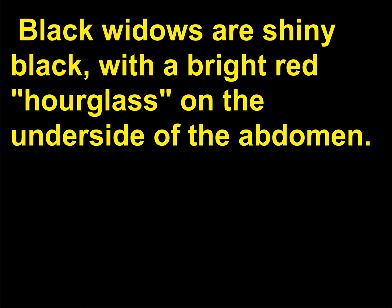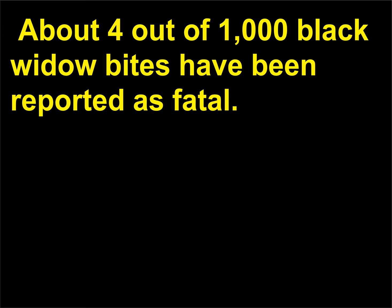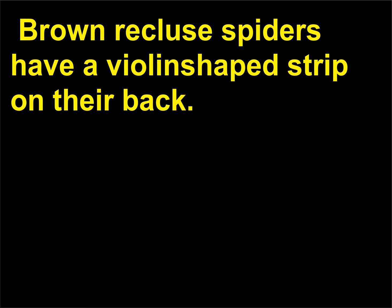Black widows are shiny black, with a bright red hourglass on the underside of the abdomen. The venom of the black widow is neurotoxic and affects the nervous system. About 4 out of 1,000 black widow bites have been reported as fatal. Brown recluse spiders have a violin-shaped strip on their back.